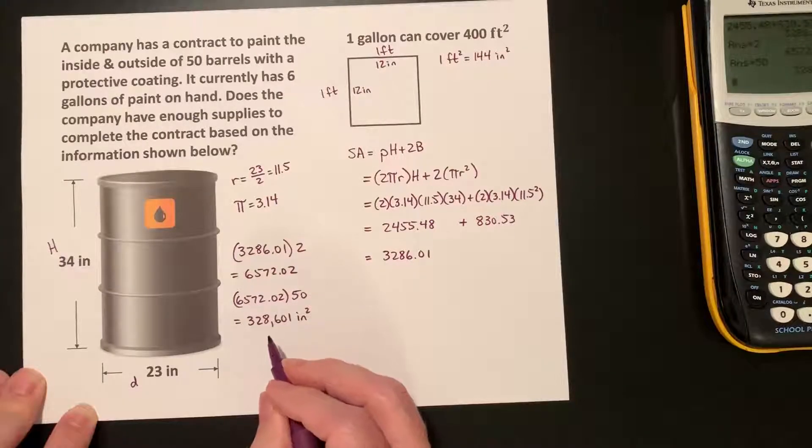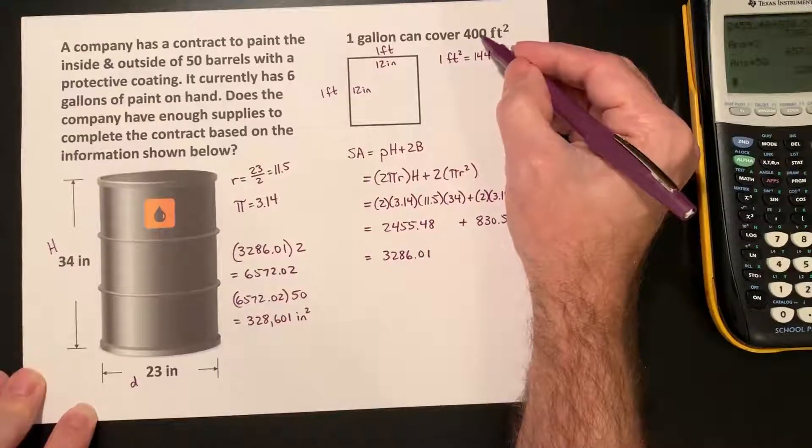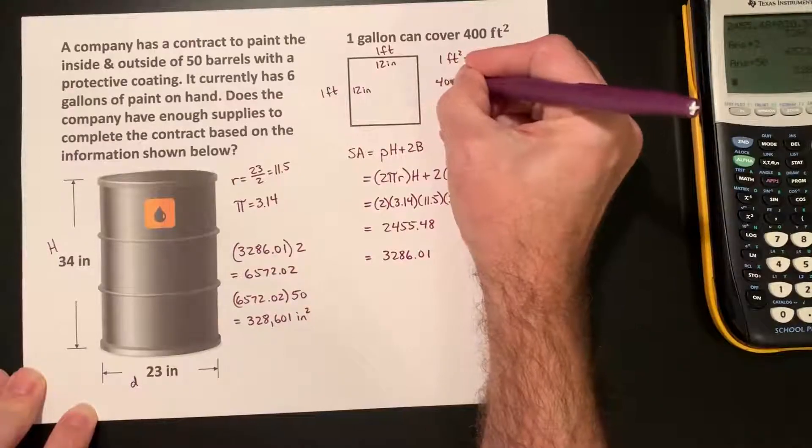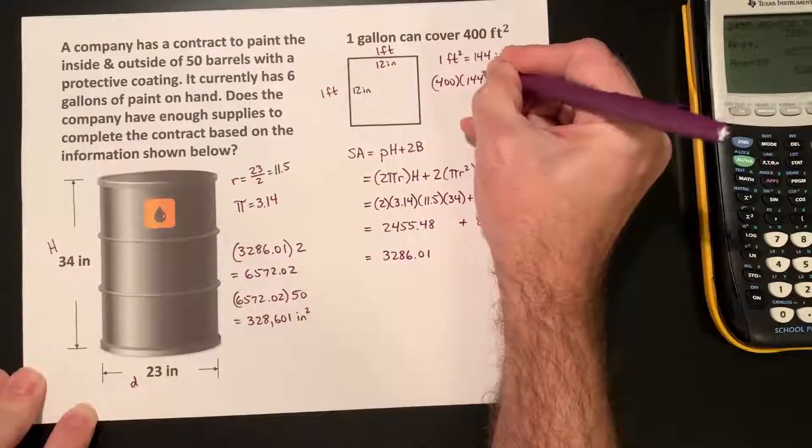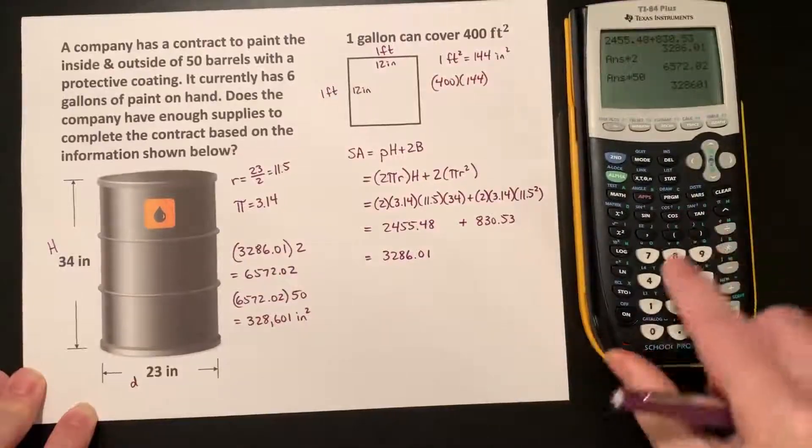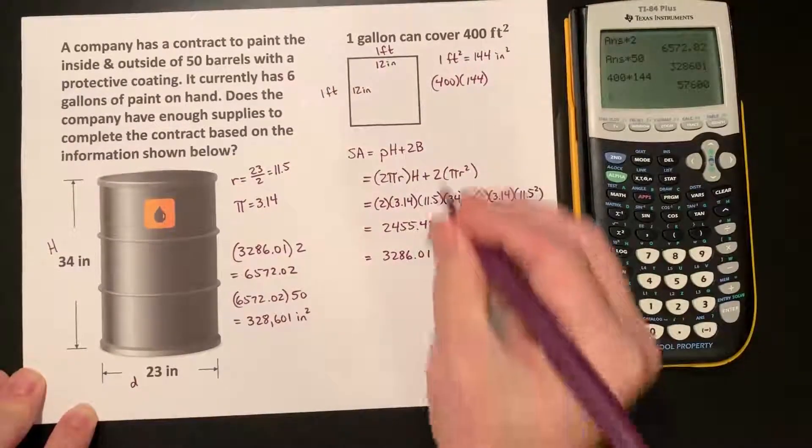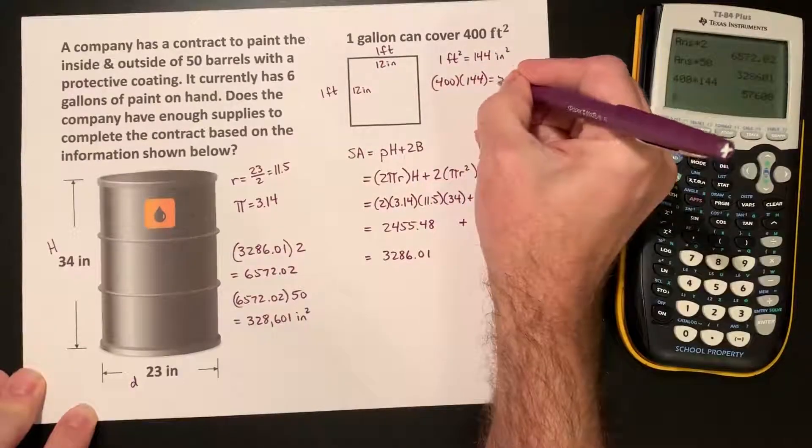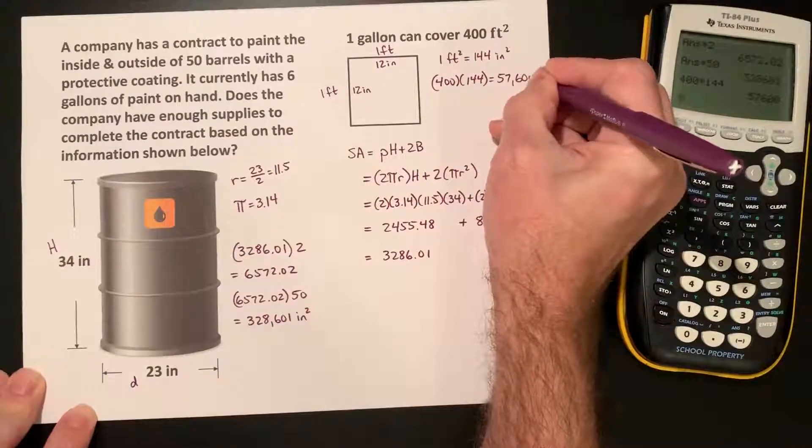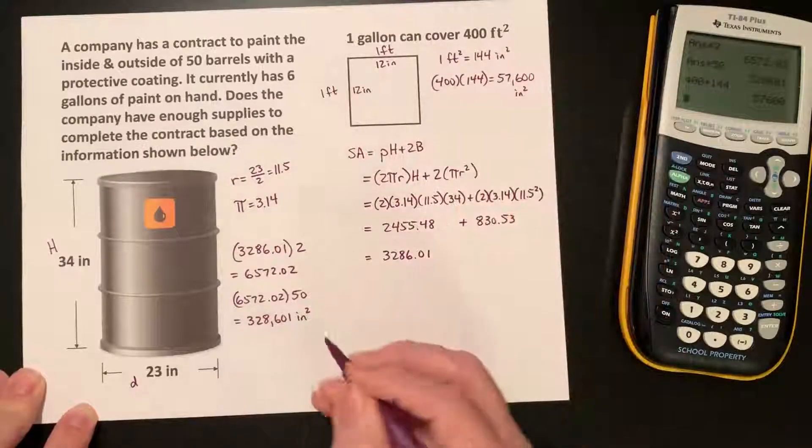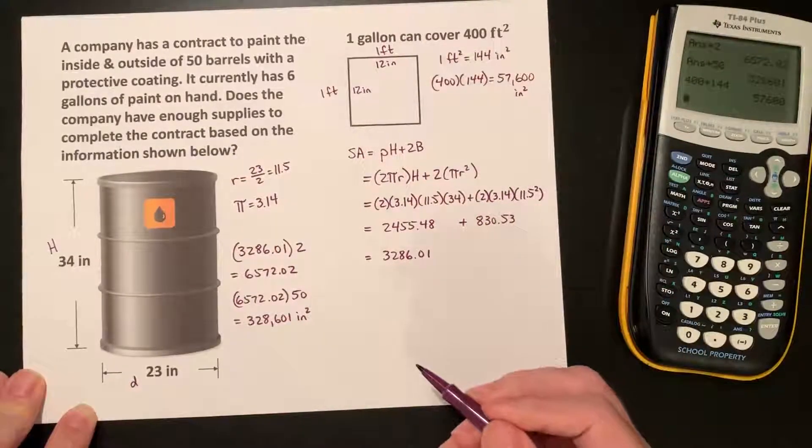So, if we'll take 400 times 144, that equals 57,600 square inches in 400 square feet.